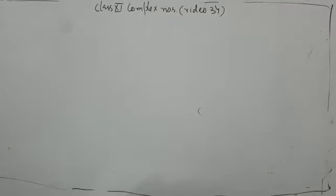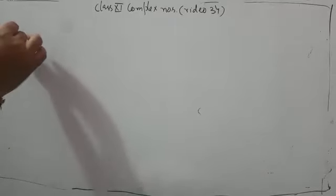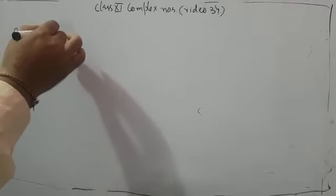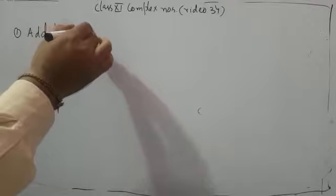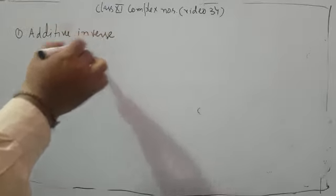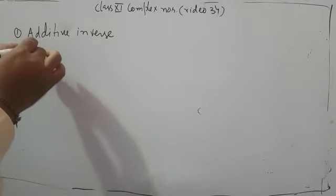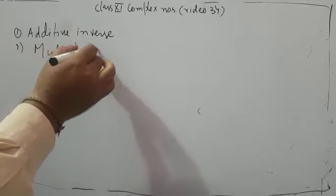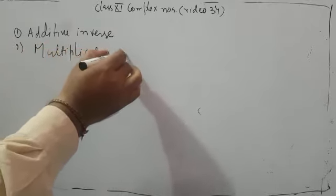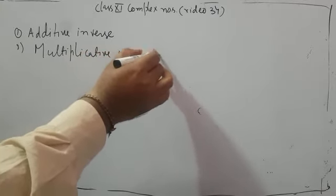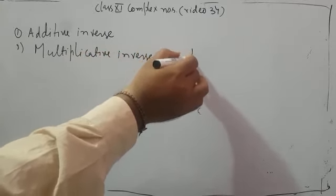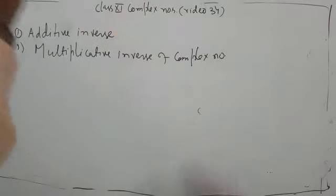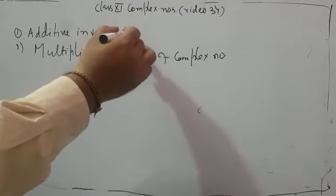After that, two important things come in complex numbers: one is the additive inverse, and the second is the multiplicative inverse — both of complex numbers. Let me first explain the additive inverse.